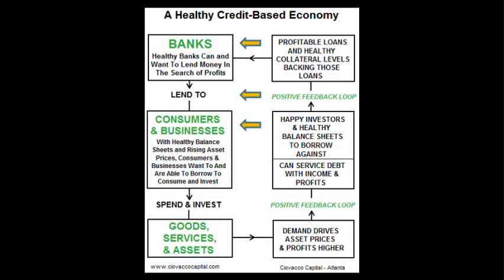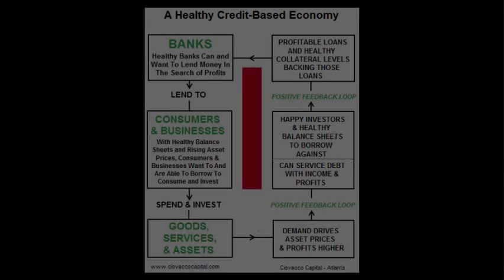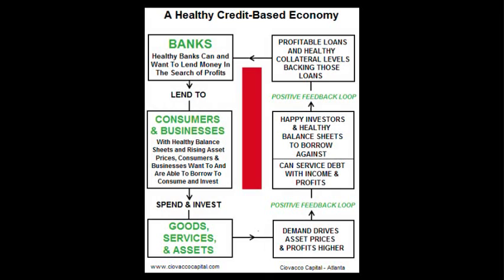When the Fed lowers interest rates, they attempt to spur borrowing and lending, as shown in the two highlighted boxes. This, in turn, can get the wealth effect back into gear, as borrowed money creates demand for goods, services, and assets. In the present day, traditional banks are reluctant to lend, and many consumers either don't want a loan or cannot get a loan. In this environment, the Fed, via quantitative easing, is trying to spark the wealth effect by attempting to reinflate asset prices.